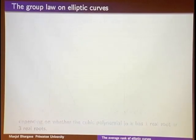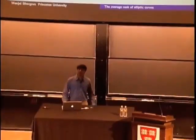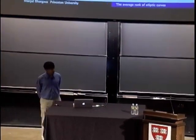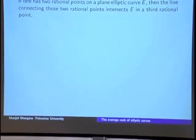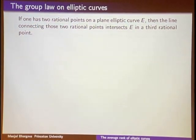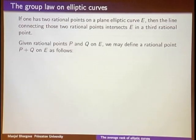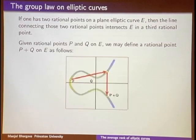What makes elliptic curves very special is that the rational points on a rational elliptic curve have a group structure. Since an elliptic curve is a cubic curve, if you have two rational points, you can take the line through them and it will always intersect the cubic in a third point. Given rational points P and Q on E, you take the line through P and Q, it intersects E in a third rational point, and then you reflect across the x-axis — that's defined to be P + Q.